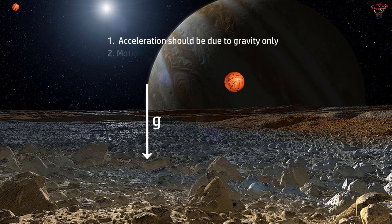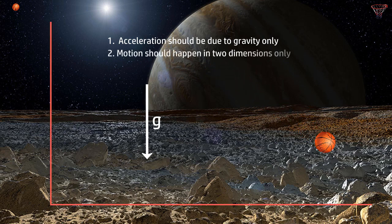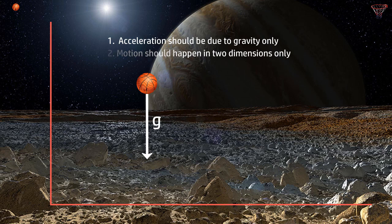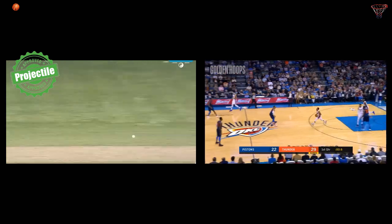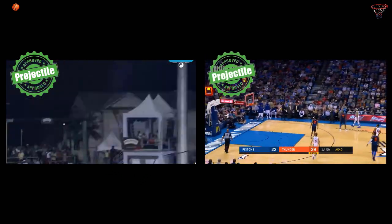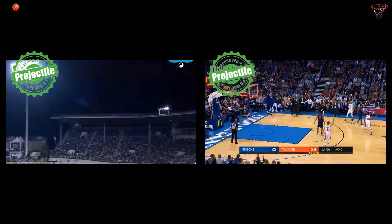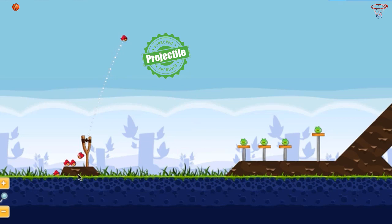And two, the motion should happen in two dimensions only. So anything that moves in two dimensions and under the force of gravity can be called a projectile. It could be a cricket ball hit off the ground, or a basketball projected towards a hoop, or the angry birds you see in the famous game we all have played.